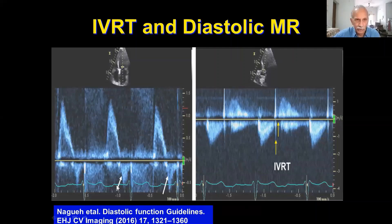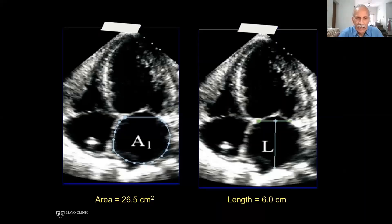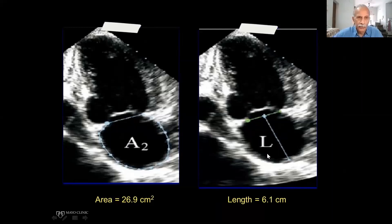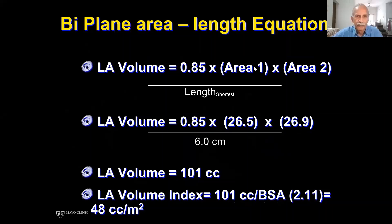LA volume must be measured using the biplane method. At end-systole, when the LA is biggest, trace it in the four-chamber view to get the area and length, then do the same in the two-chamber view. The formula is 0.85 times area 1 times area 2 divided by the shortest length — not the longest. This gives you the LA volume. Divide by body surface area to get the volume index. Weight and height should be measured for every patient entering the clinic so body surface area can be calculated for proper interpretation.